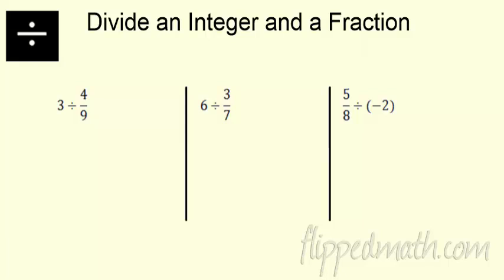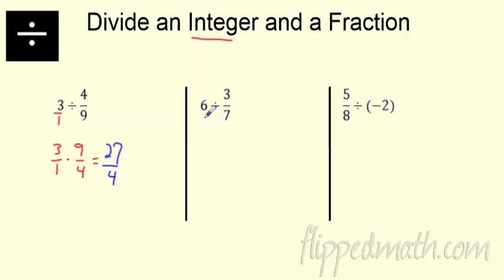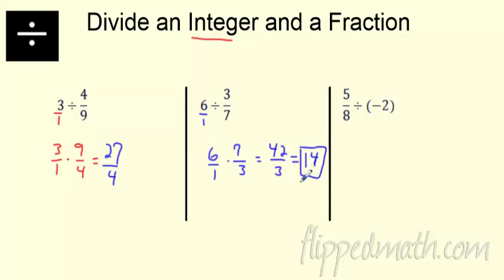Now we're going to divide a whole number by a fraction. Same thing — make it three over one. Flip the second fraction: four ninths becomes nine over four. Multiply: three times nine is 27, one times four is four. So 27 fourths. On the next one, take the time to rewrite it. Six over one divided by three sevenths — flip the second fraction: three over seven becomes seven over three. Six times seven is 42, one times three is three. You can reduce: 42 divided by three is 14, so the answer is just 14.